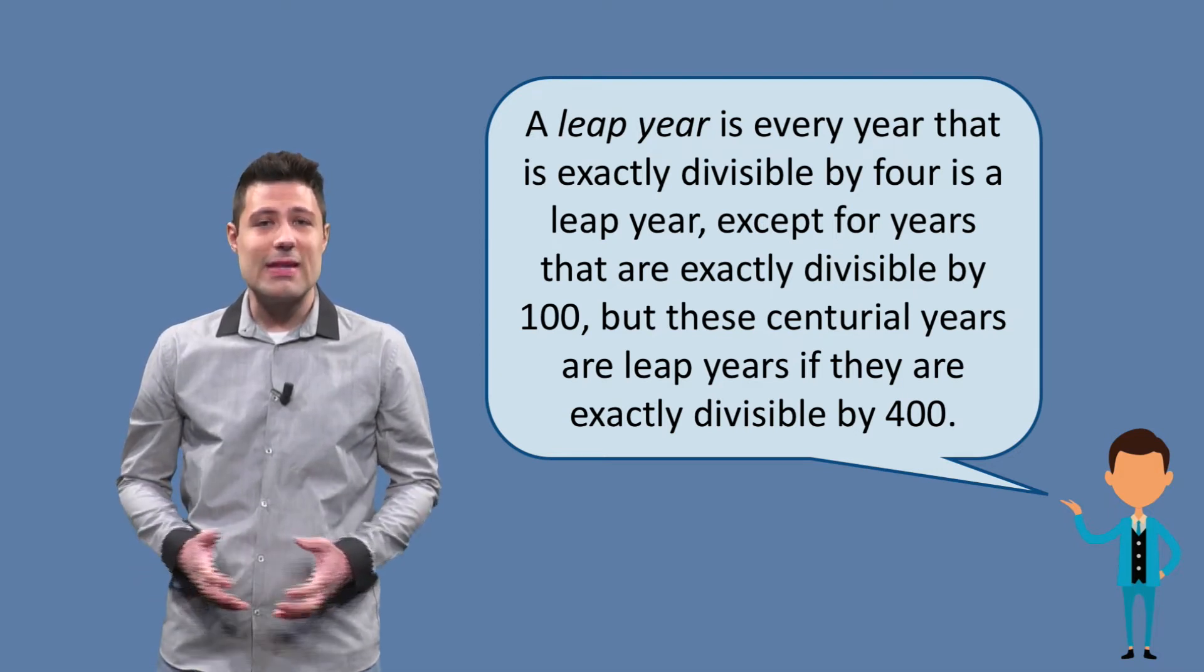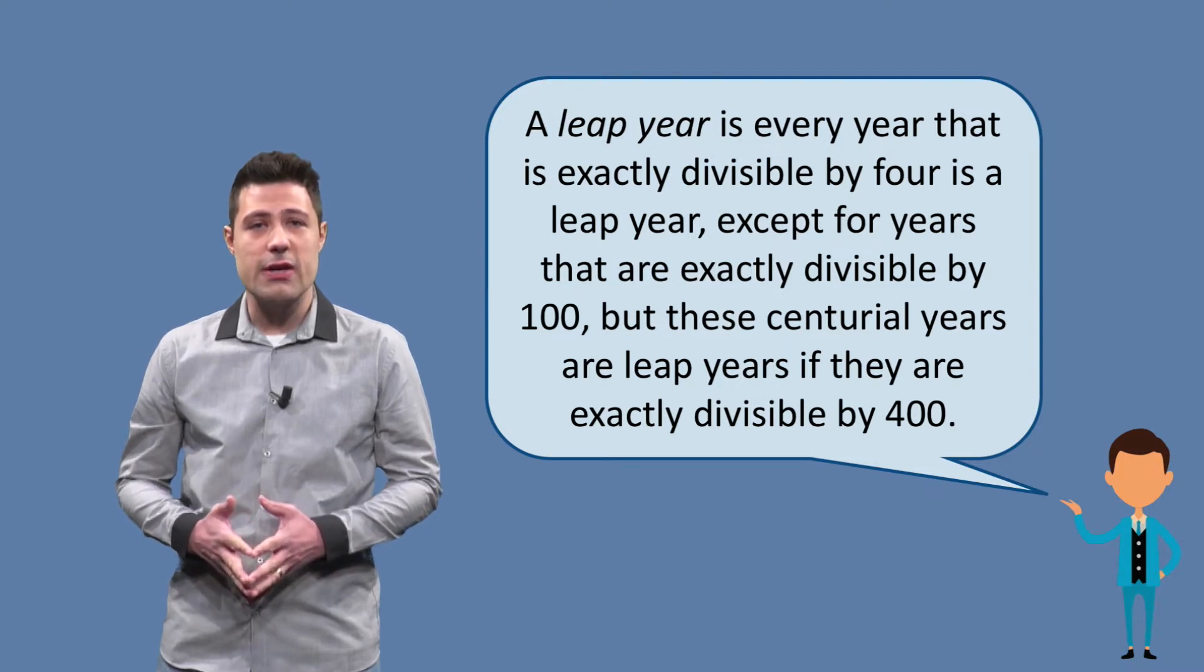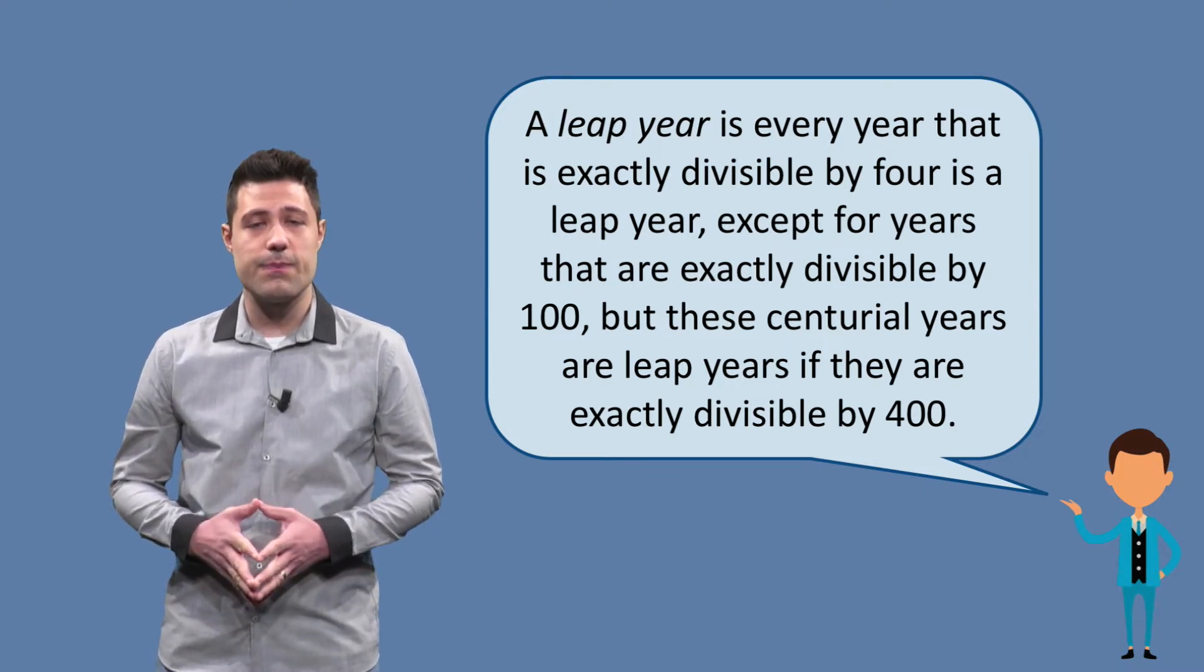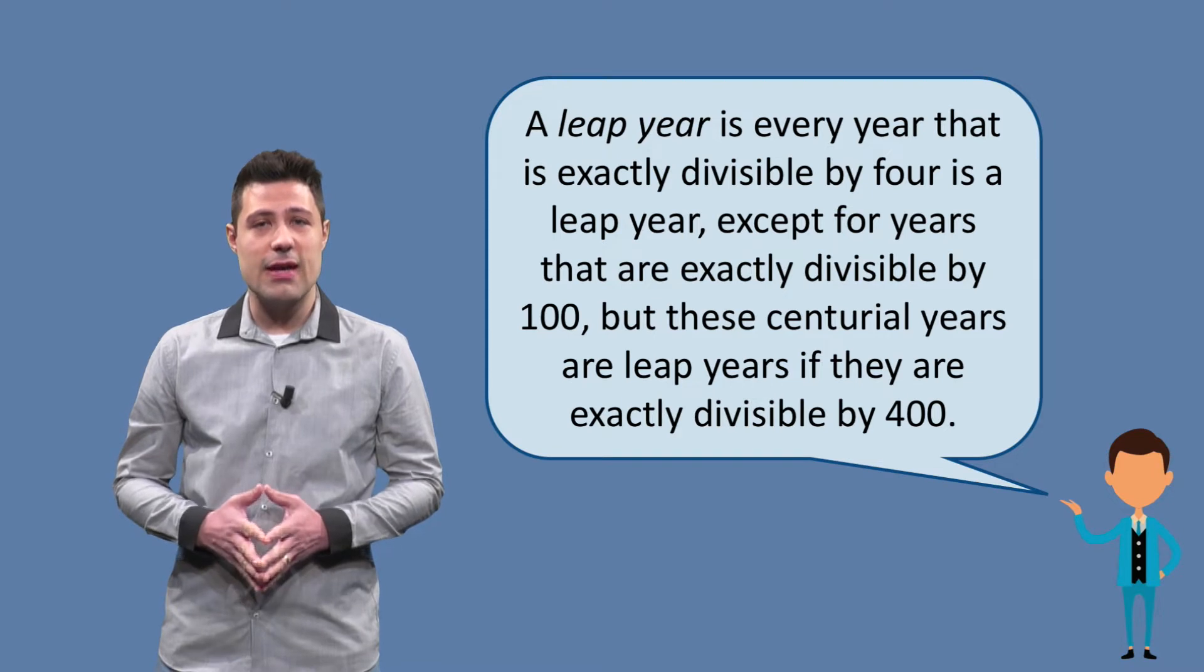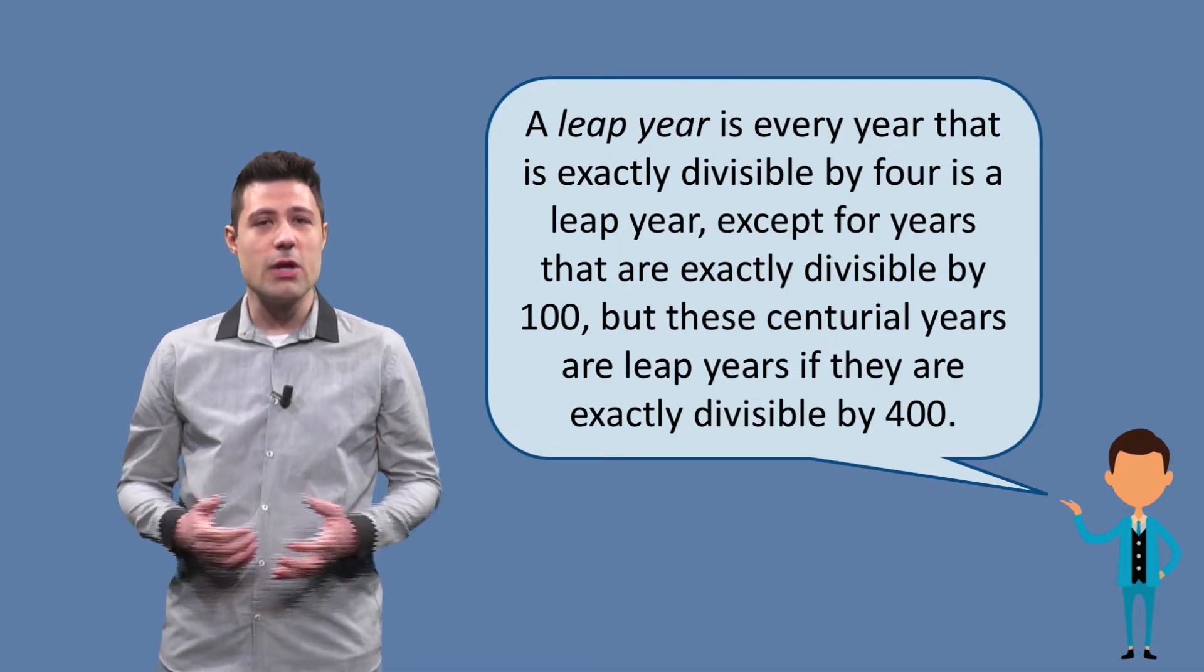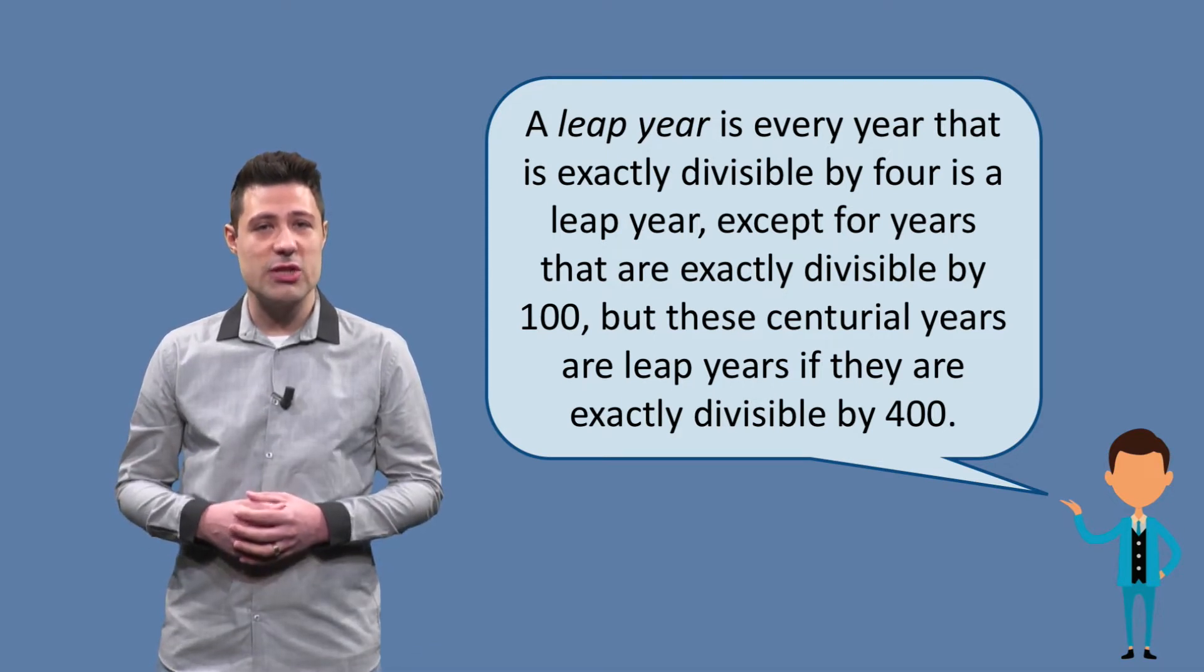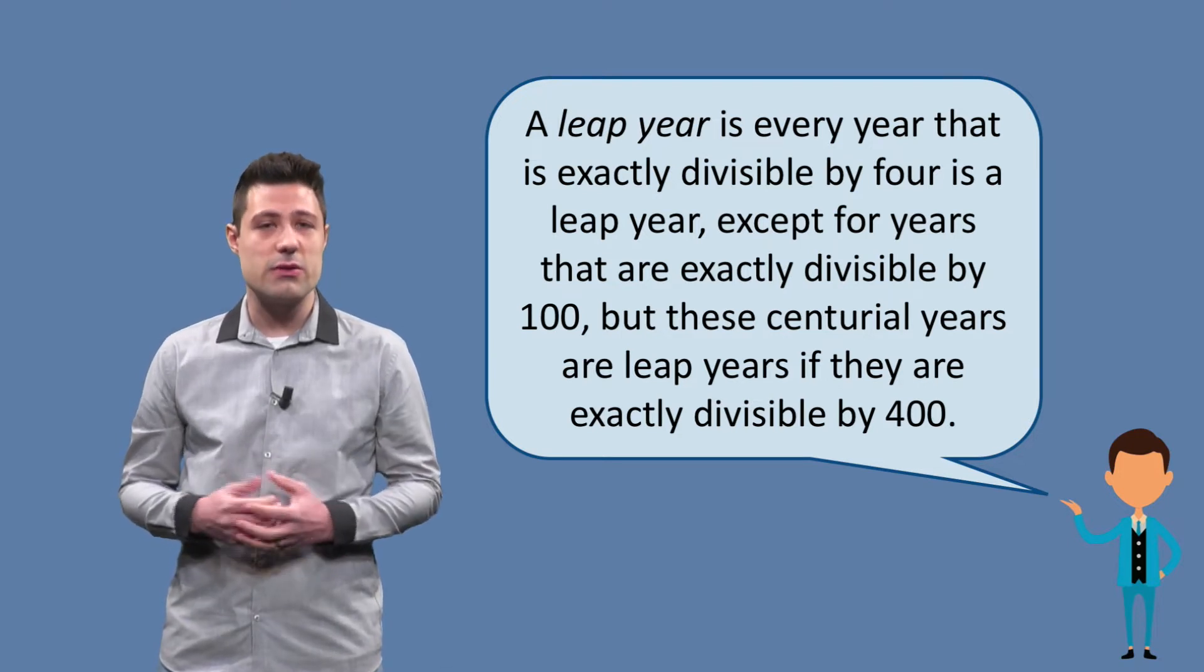We need to develop a program that tells us whether a year is a leap year or not. A leap year is a year that has one more day in February, so that our calendar is always adjusted with the movement that our planet does around the Sun.